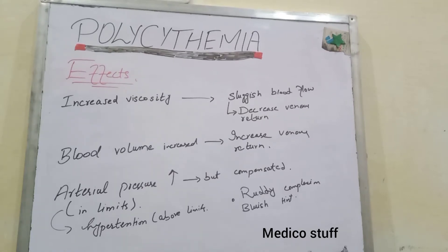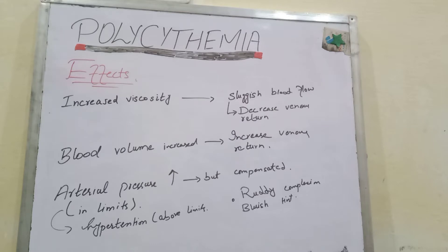We will study the effects of polycythemia. In my first video I explained what polycythemia is and what are the types of polycythemia. Polycythemia can be physiological or pathological. The pathological polycythemia is called polycythemia vera, while the physiological is called secondary polycythemia. The effects of polycythemia on circulation is studied in today's video.